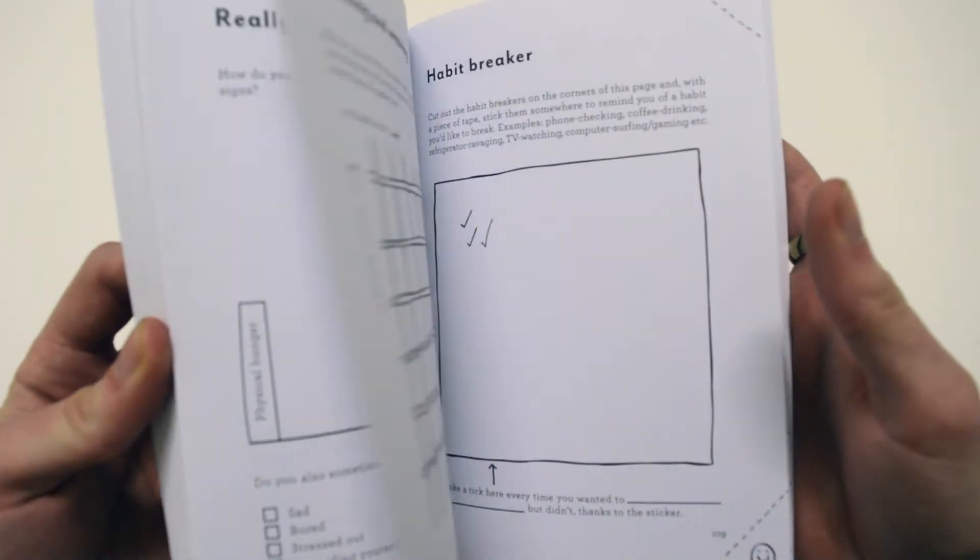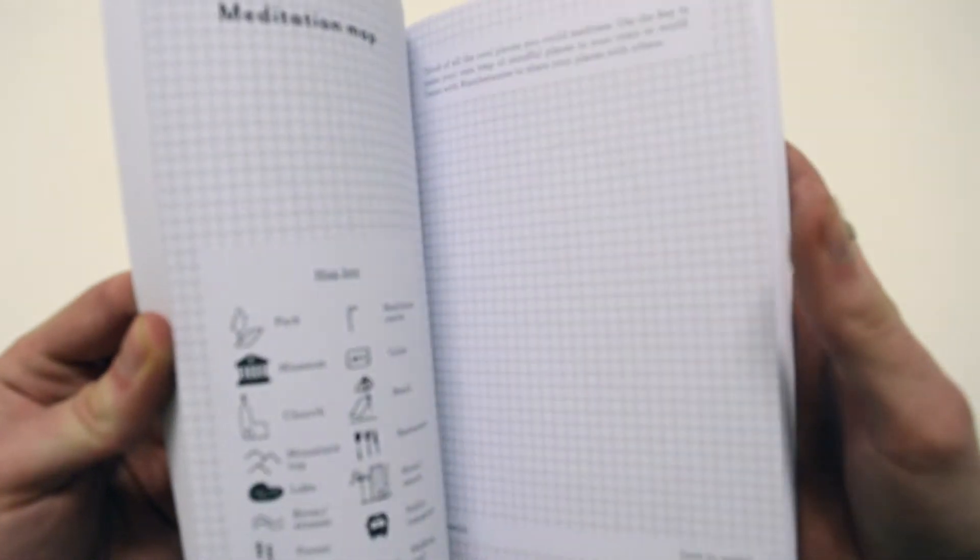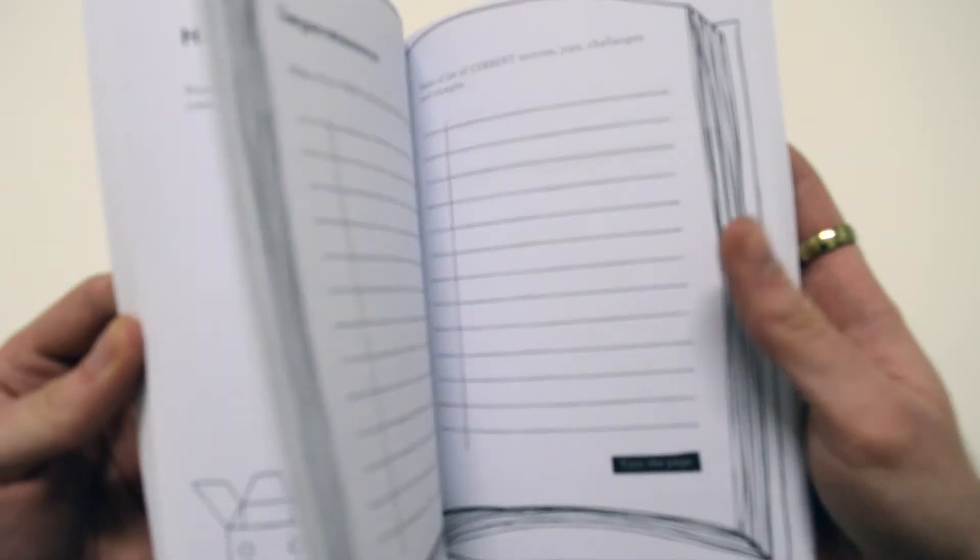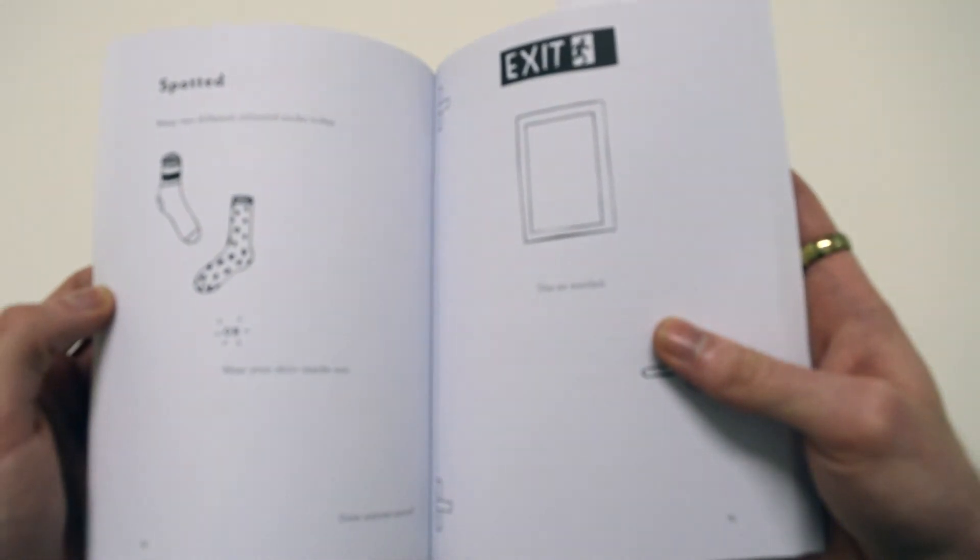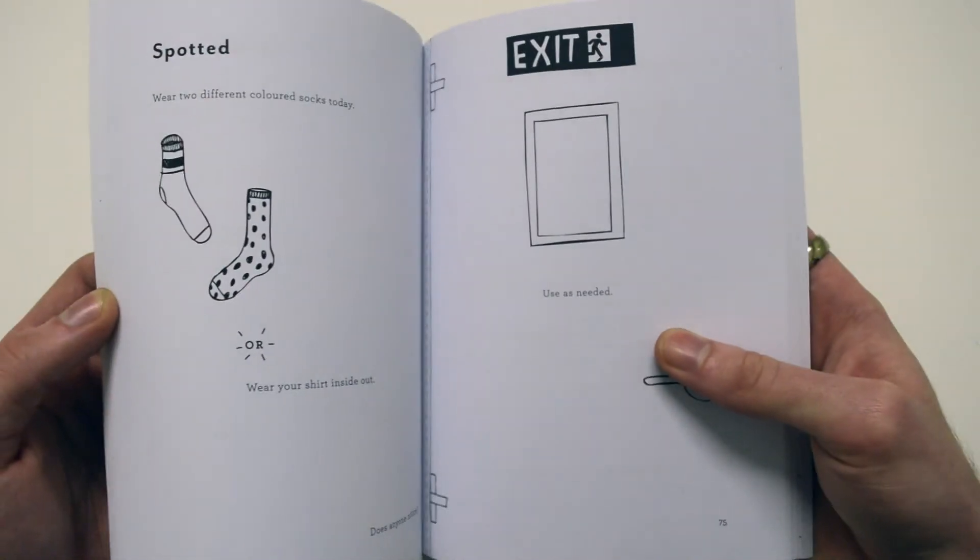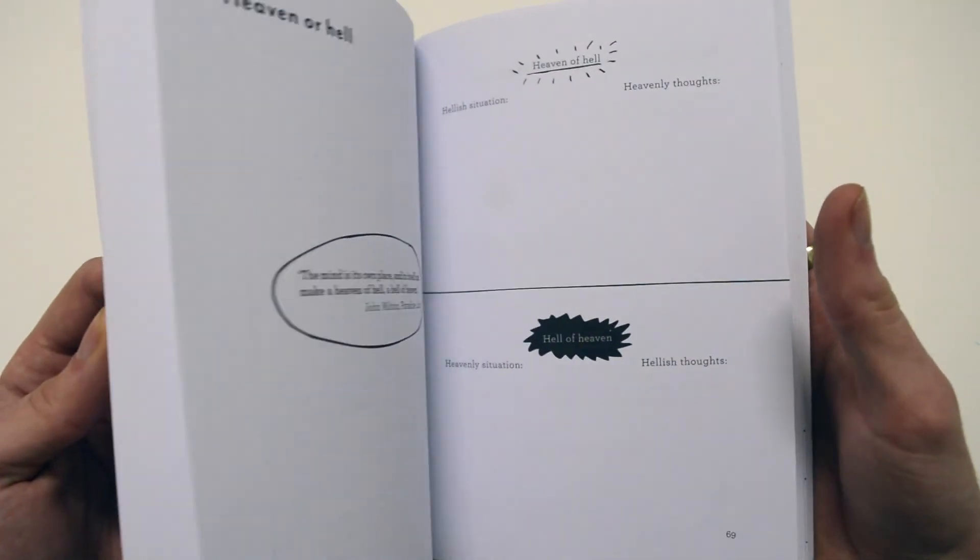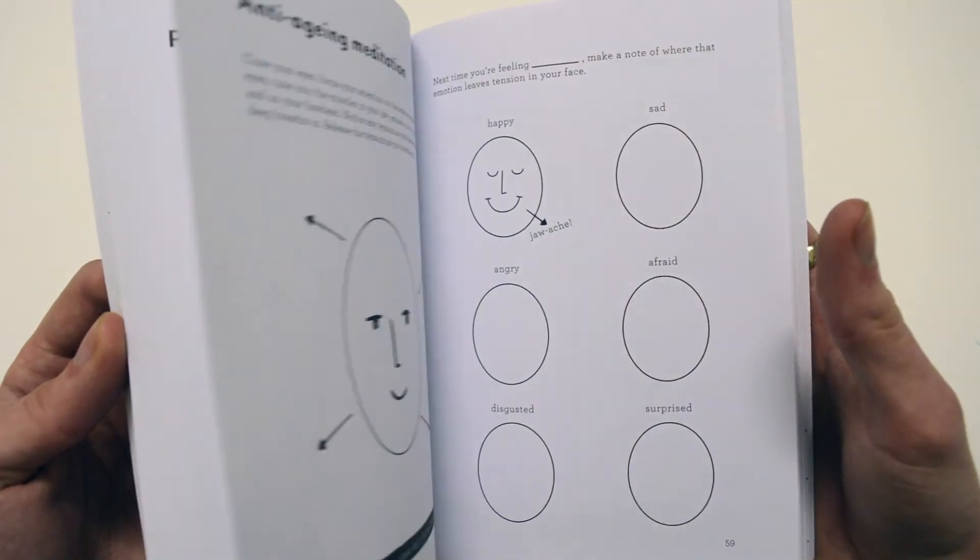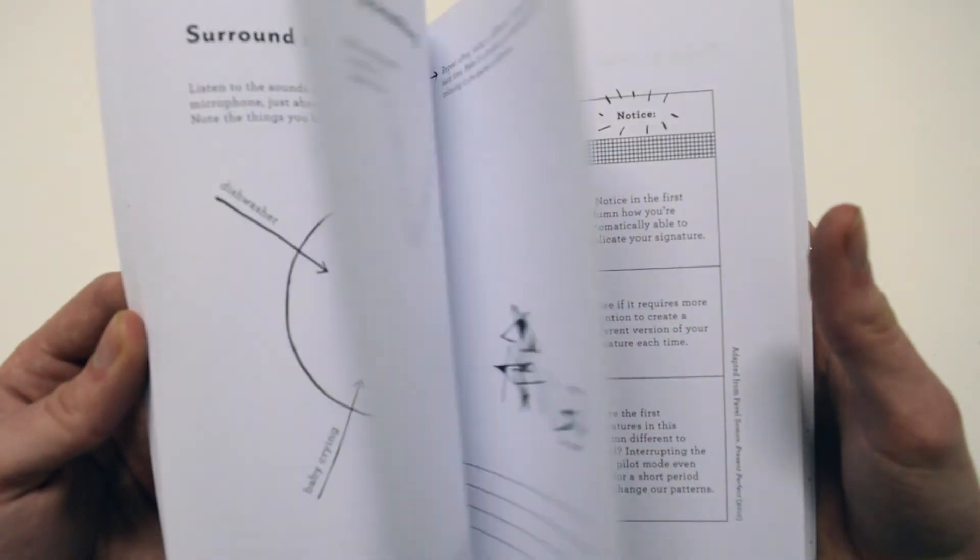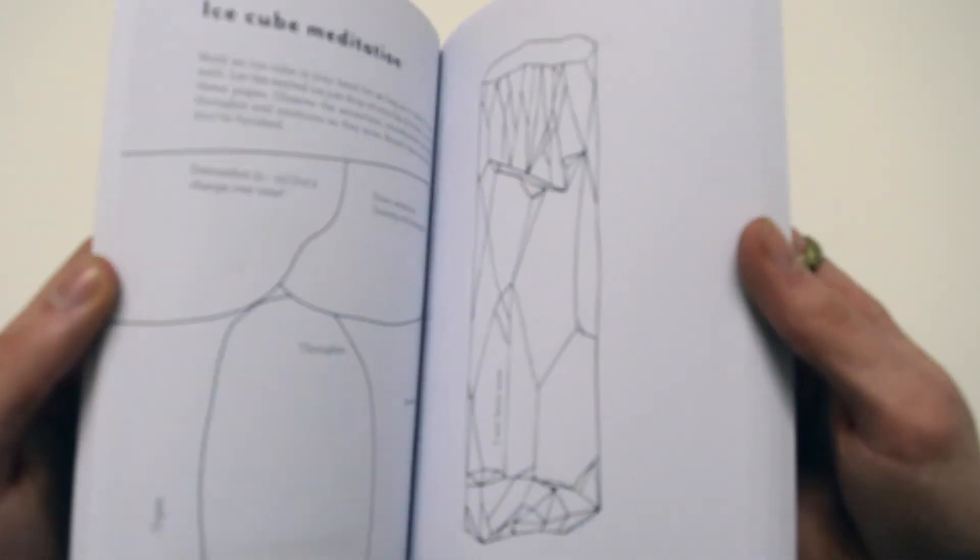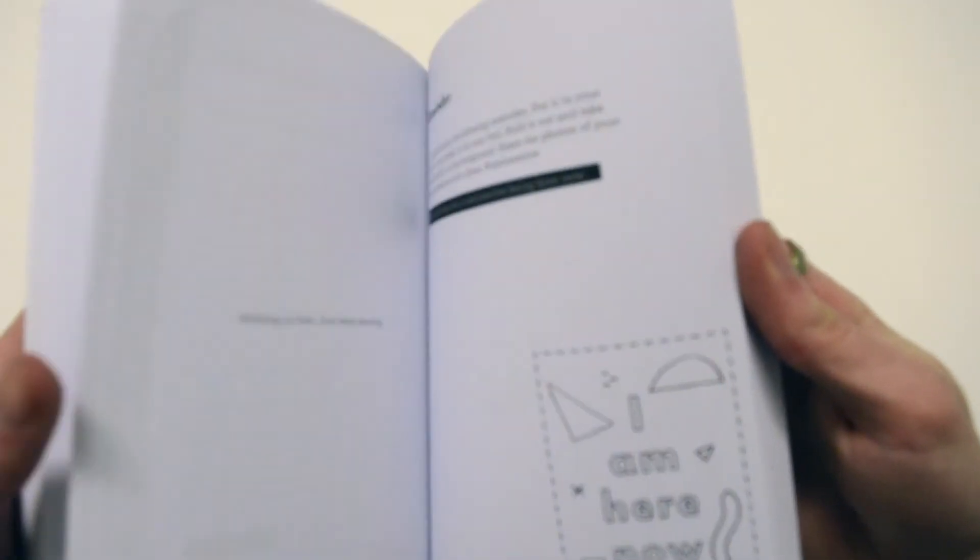I quite like that. If I hadn't been given this as a gift, would I buy it for myself? I don't know. My sister's got a Wreck This Journal and I quite like doing that, so if someone had recommended it to me, yeah, I think I probably would. Or I'd probably buy it as a gift for my aunties and my mum. They're quite big on mindfulness and yoga and that kind of thing.